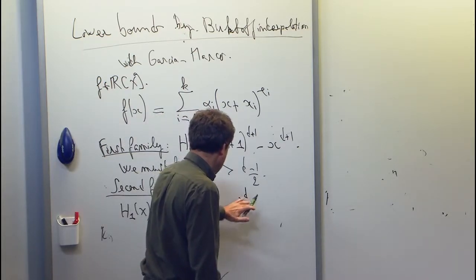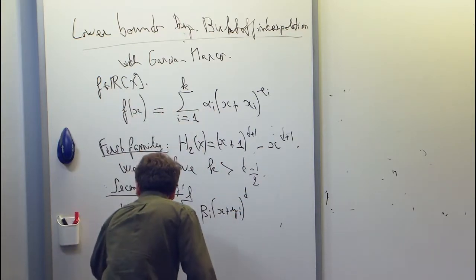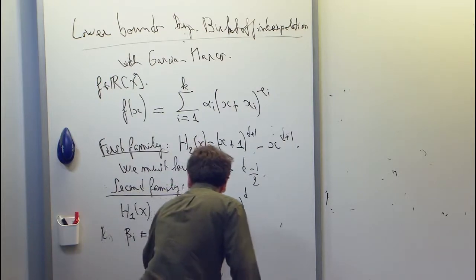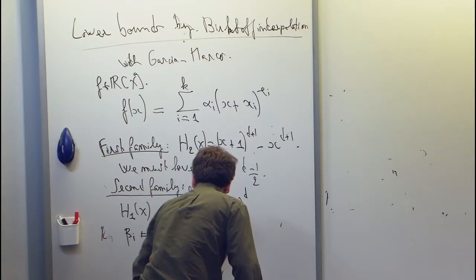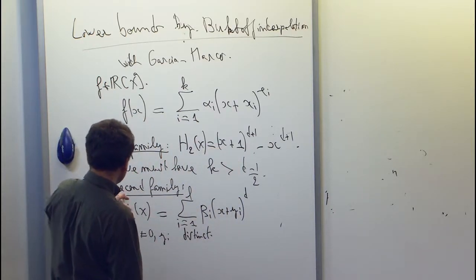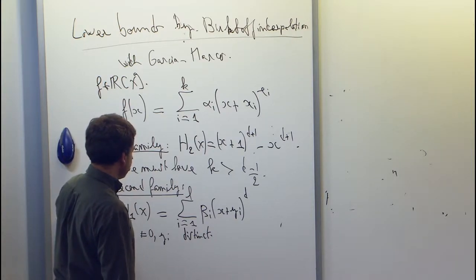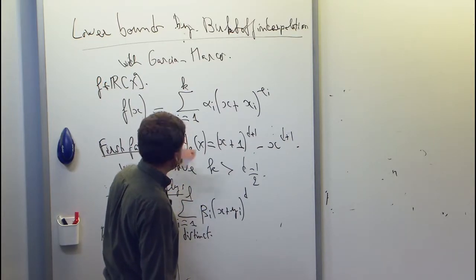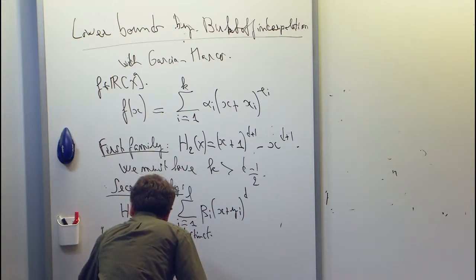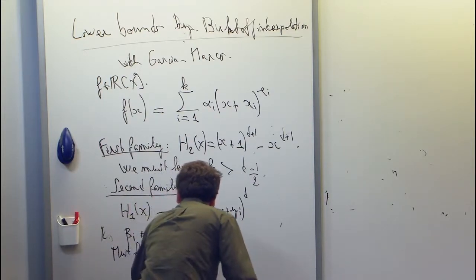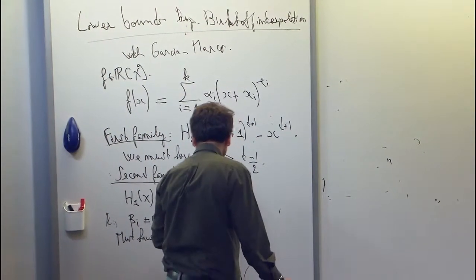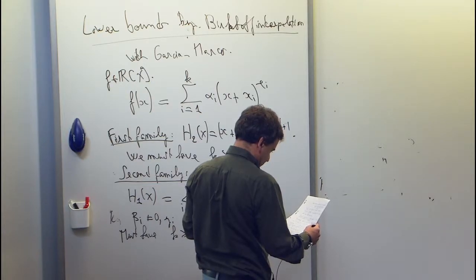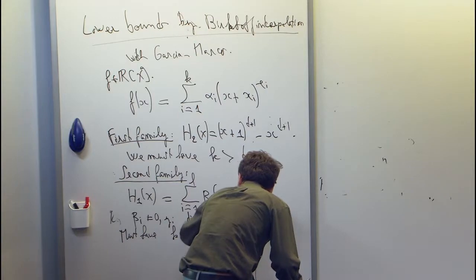This is any constant, so the beta i's are non-zero and the yi should be distinct. And the result for this family is that you cannot save anything, so this is already presented as a sum of l powers, and there's no way to rewrite it as a smaller sum. You must have always k at least l, so this is an optimal representation. If l is not too big, so the exact value is d plus 2 over 4.